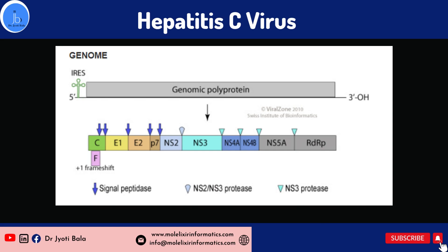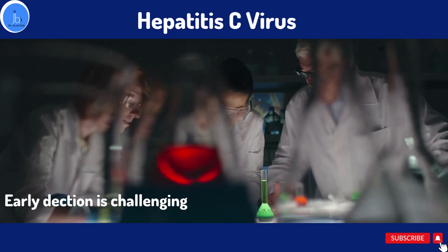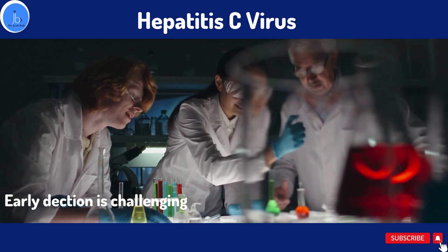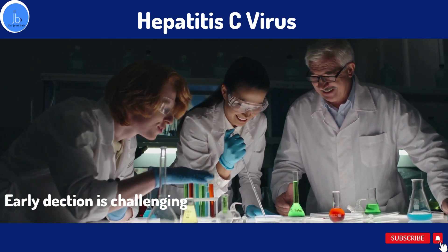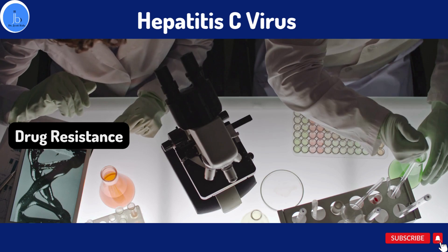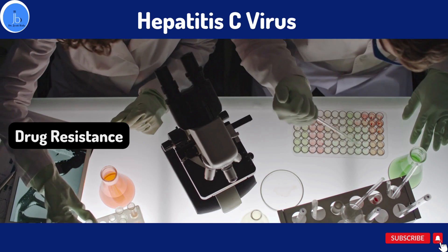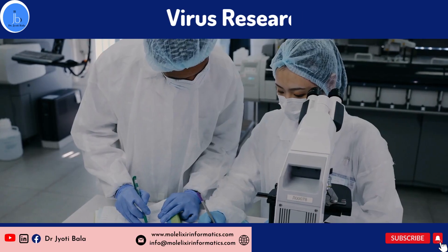The fifth significant and challenging virus is Hepatitis C. It is challenging to research because it exists in multiple genotypes, each with distinct genetic characteristics, making it difficult to develop treatments and vaccines that can effectively target all genotypes. It is also difficult to detect, especially in the early stages of infection. Additionally, Hepatitis C can develop resistance to antiviral drugs, making it difficult to cure. There is ongoing research into new drug combinations and combination therapy to address drug resistance.